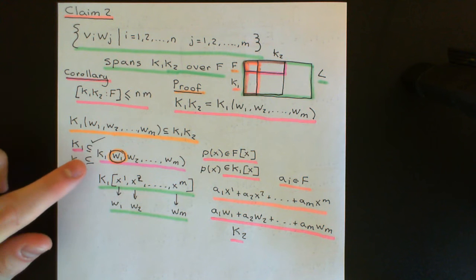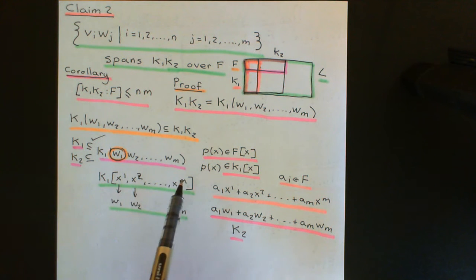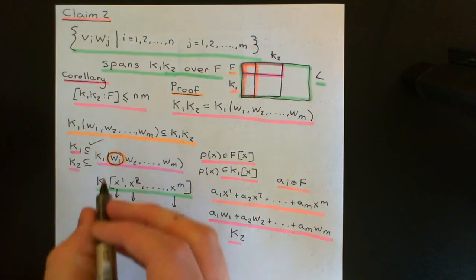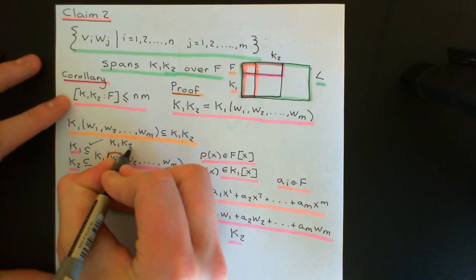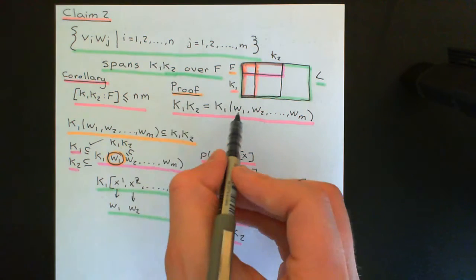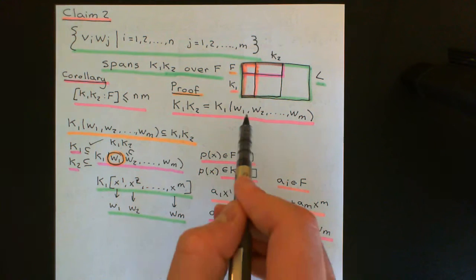Since k1 and k2 are both contained within the field extension of k1 generated by w1, w2, all the way up to wm, this is a subfield of L which contains both k1 and k2. Therefore it will be one of the things intersected together to produce the composite of k1 and k2, and we can conclude that the composite of k1 and k2 is contained within this. So truly, the composite of k1 and k2 is equal to this field extension of k1 generated by w1, w2, all the way up to wm.